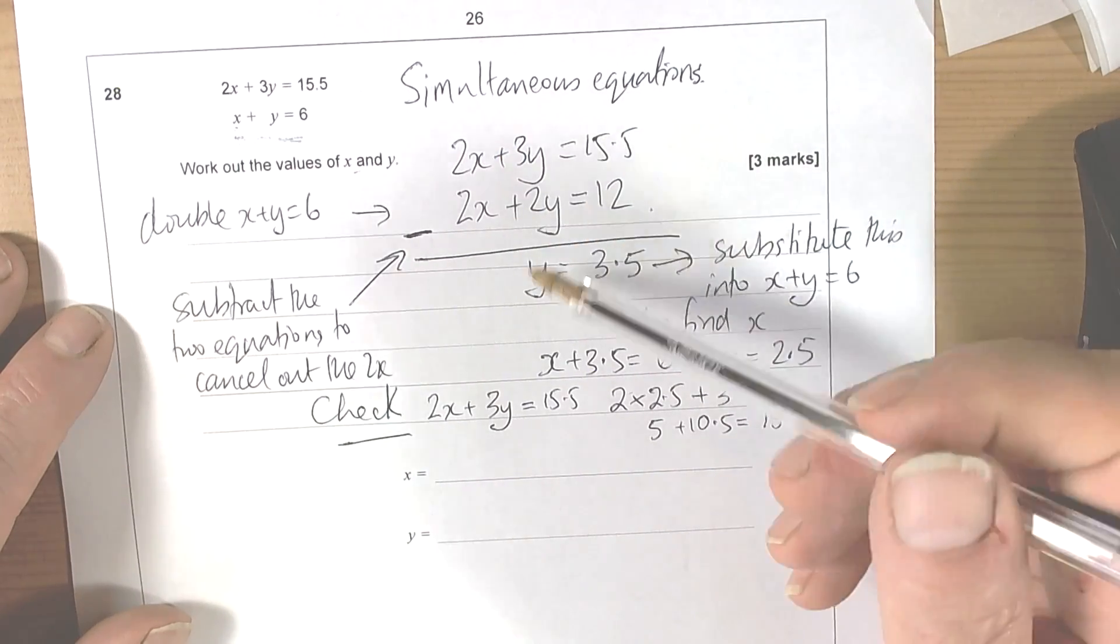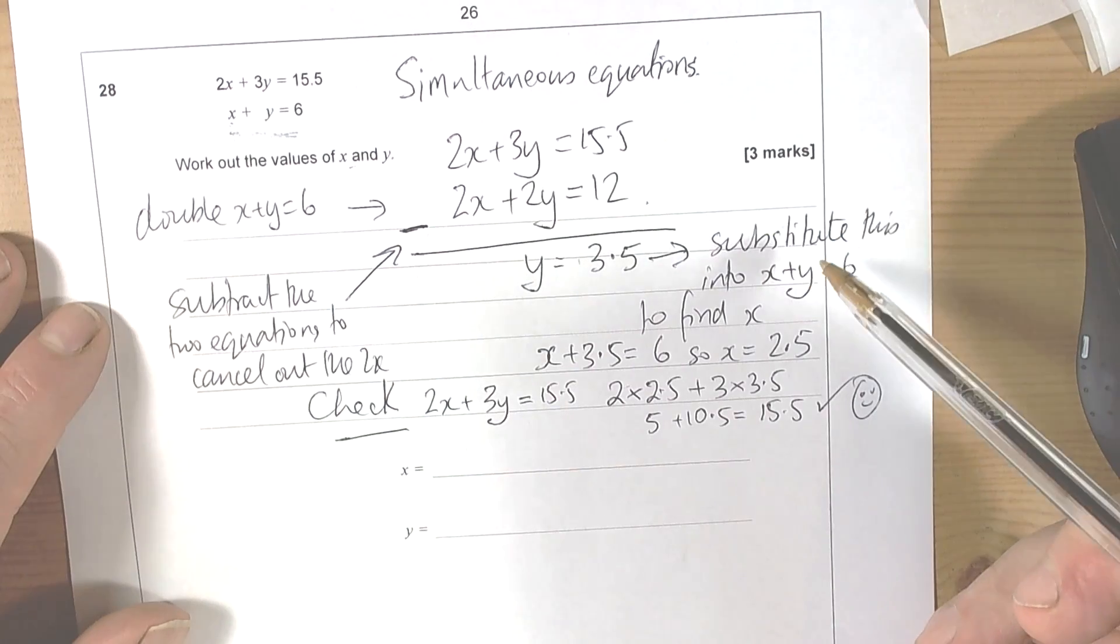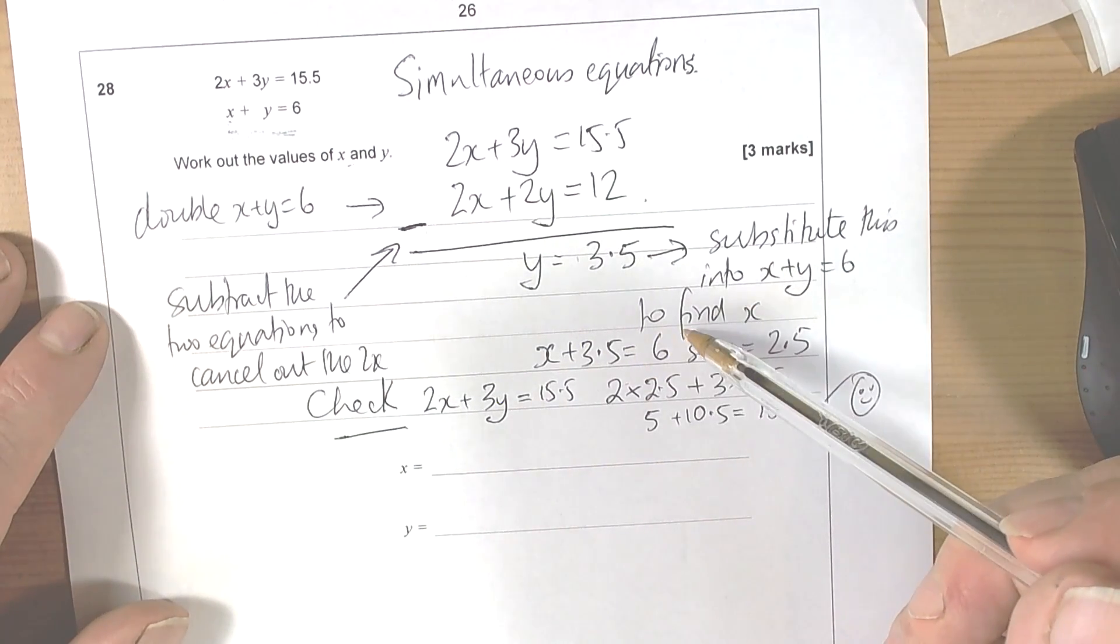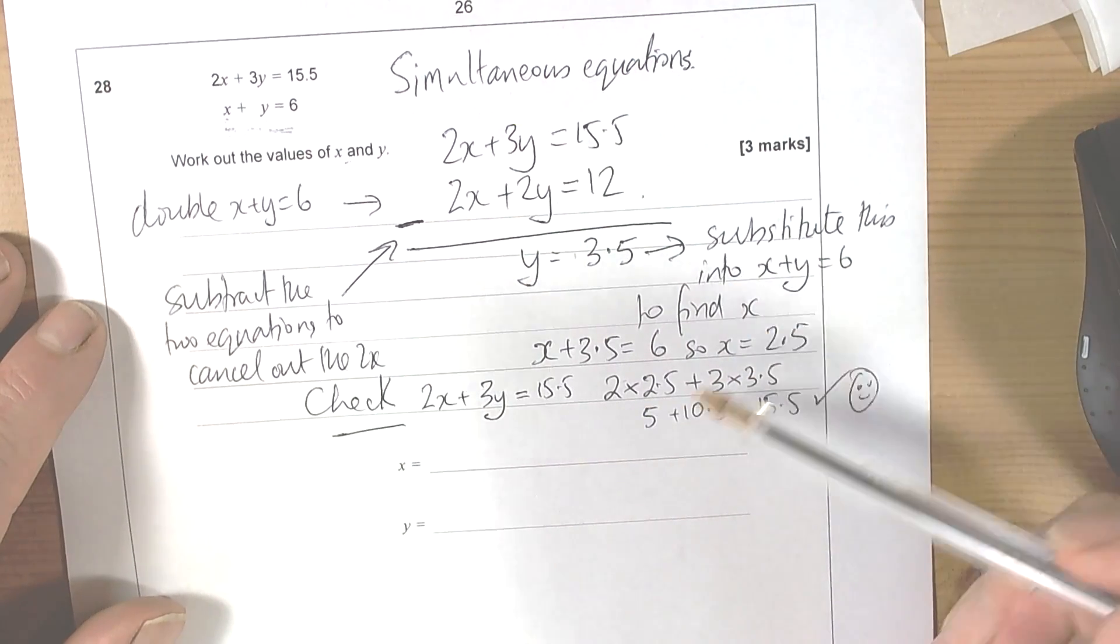To find the value of one of the letters, and then once you've got the value of one of the letters, you can substitute that value into one of the equations to find the value of the other letter. And once you've got the two values that you think work, you should then check those two values in the equation that you haven't used to get the second value.